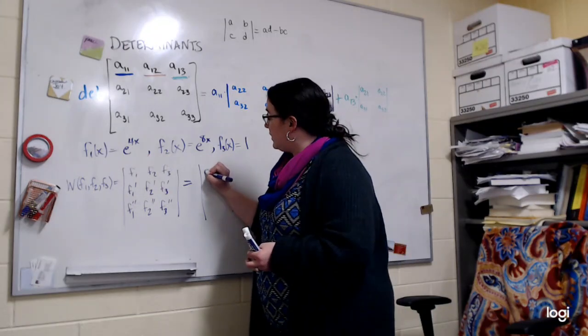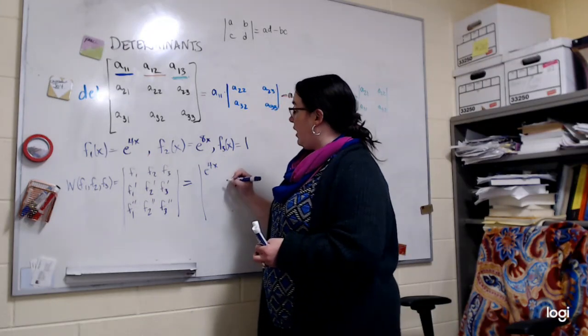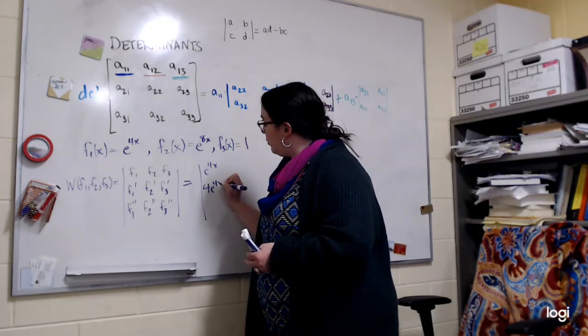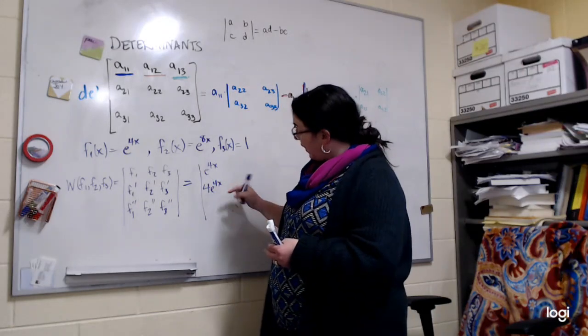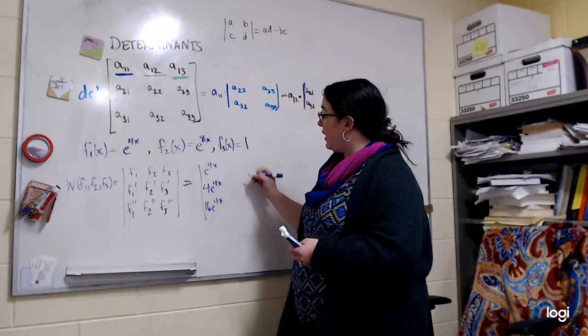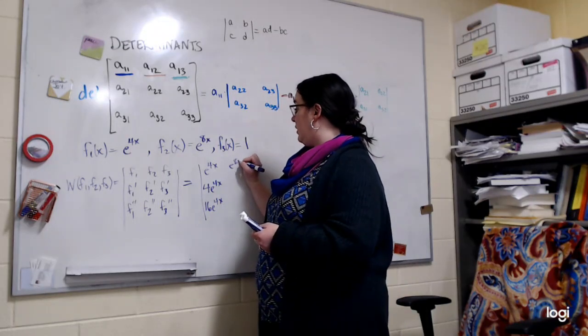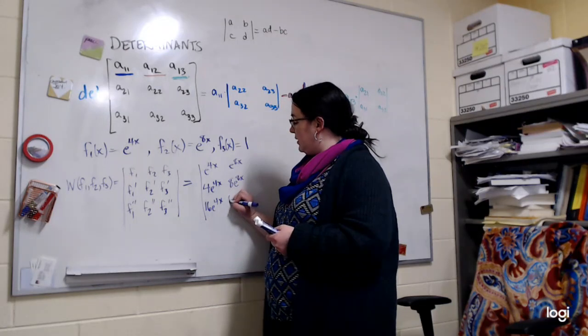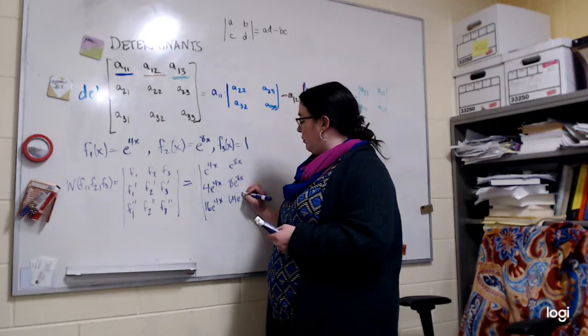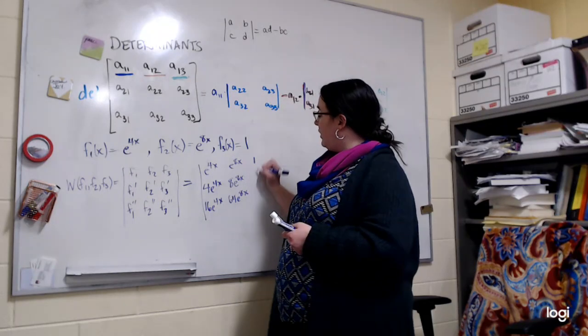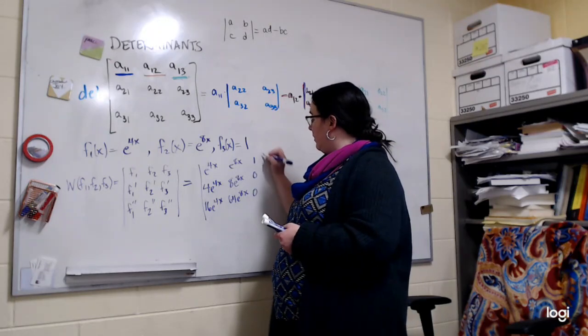So let's go ahead and do it in our example. So we'd have e to the 4x and the derivative of e to the 4x is 4e to the 4x, while the derivative of that would be 16e to the 4x. Next we had e to the 8x. Its derivative would be 8e to the 8x and its second derivative would be 64e to the 8x. Finally, we have 1. Its first and second derivatives are 0.